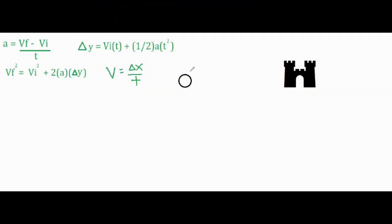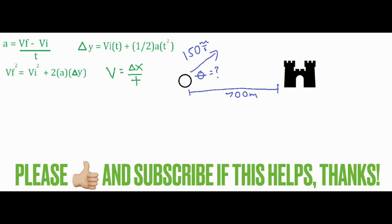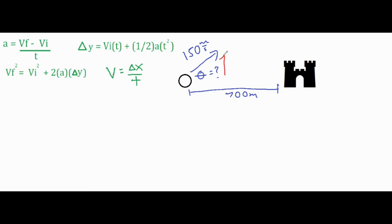In this video, we have a cannonball fired with a velocity of 150 meters per second at a castle that is 700 meters away. The question is: at what angle does it need to be fired in order to reach that castle at exactly 700 meters away? This problem is going to get fairly complicated mathematically, so follow along closely. We're going to solve for the vertical and horizontal components.